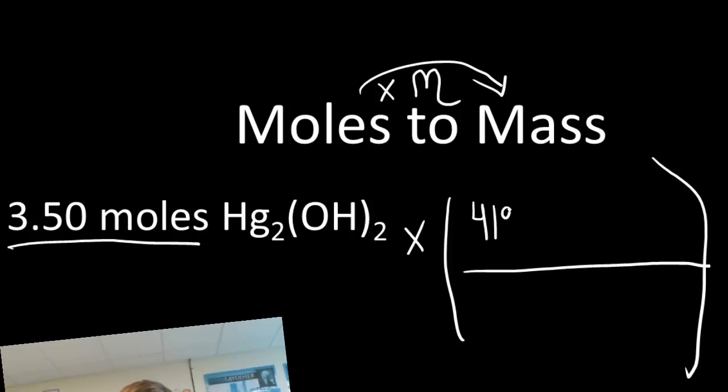We just found it. It was 419.2 grams for every one mole. And notice, I'm not going to write out Hg2OH2, but we're talking about the same thing. This molar mass, 419.2, is only for this compound here. Different compounds have different molar masses. That number changes. So watch out for that.